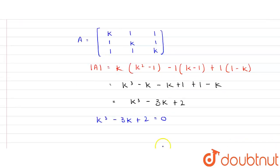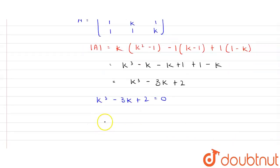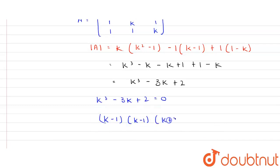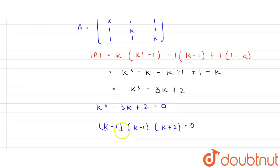This is a cubic equation. Solving it gives the factors (k - 1)(k - 1)(k + 2) = 0. Let me show how we arrived at these three factors.